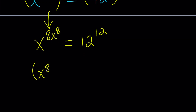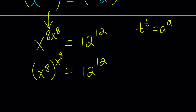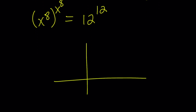We're going to write this as X to the 8th, to the power X to the 8th. My goal was to write this as a to the power a — the form t to the t. Both sides are now in that form. If you have t to the t equals a to the a, that's great. Let's go ahead and look at the graph of the function f of t equals t to the power t.